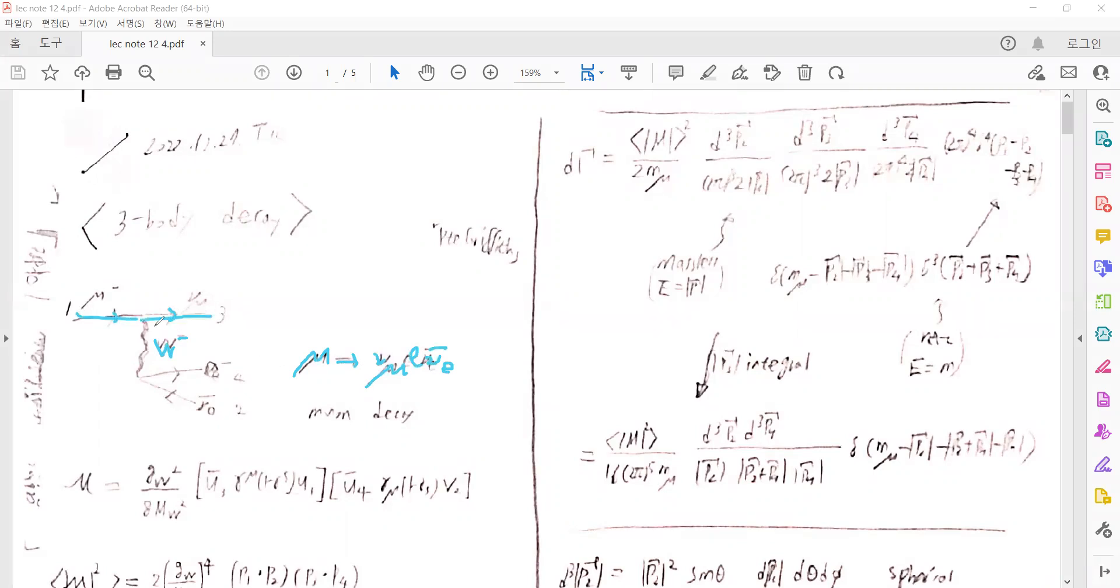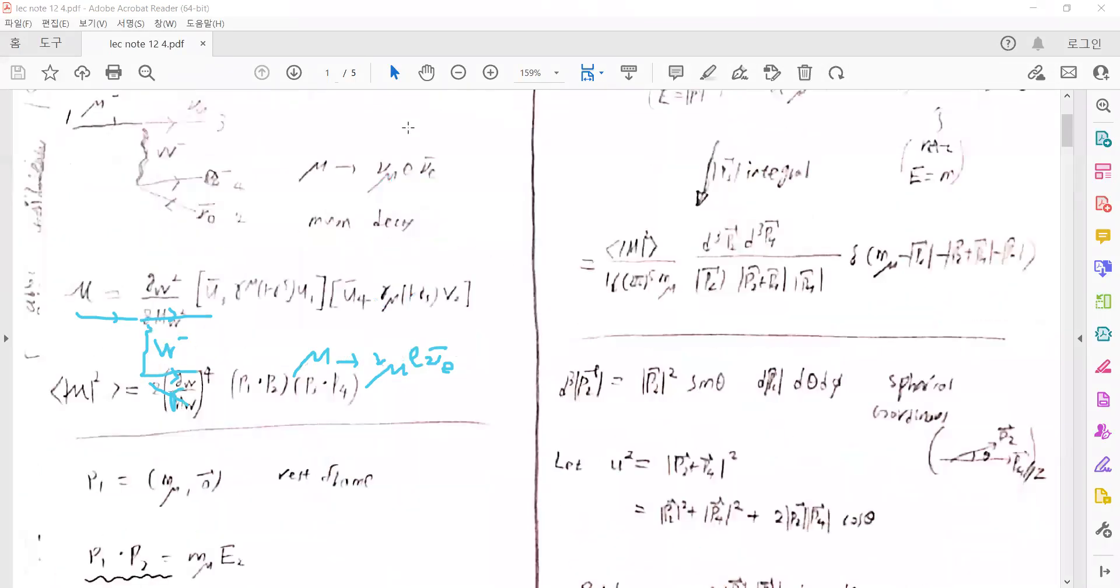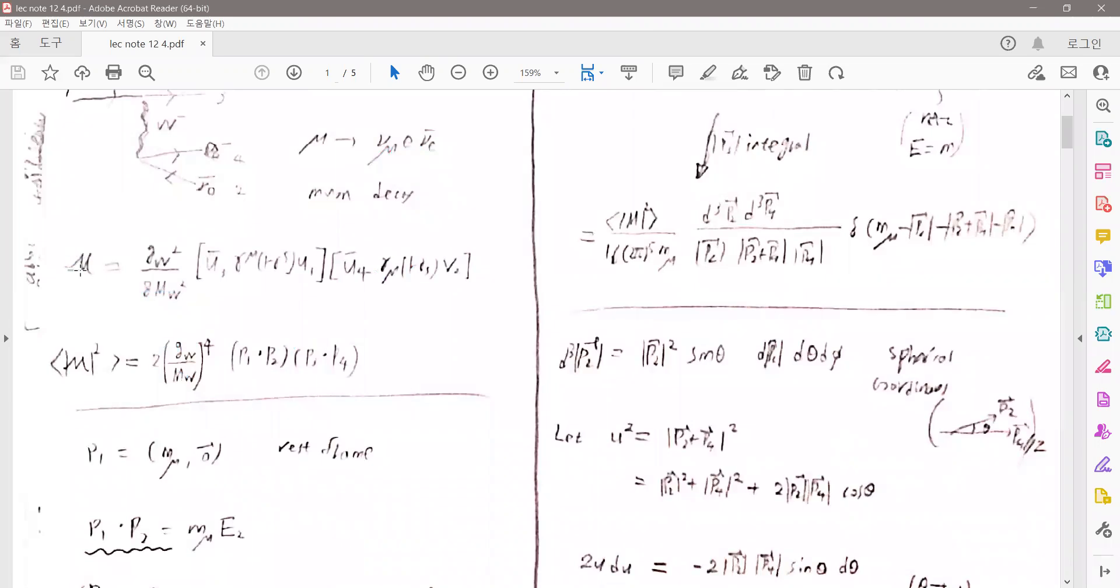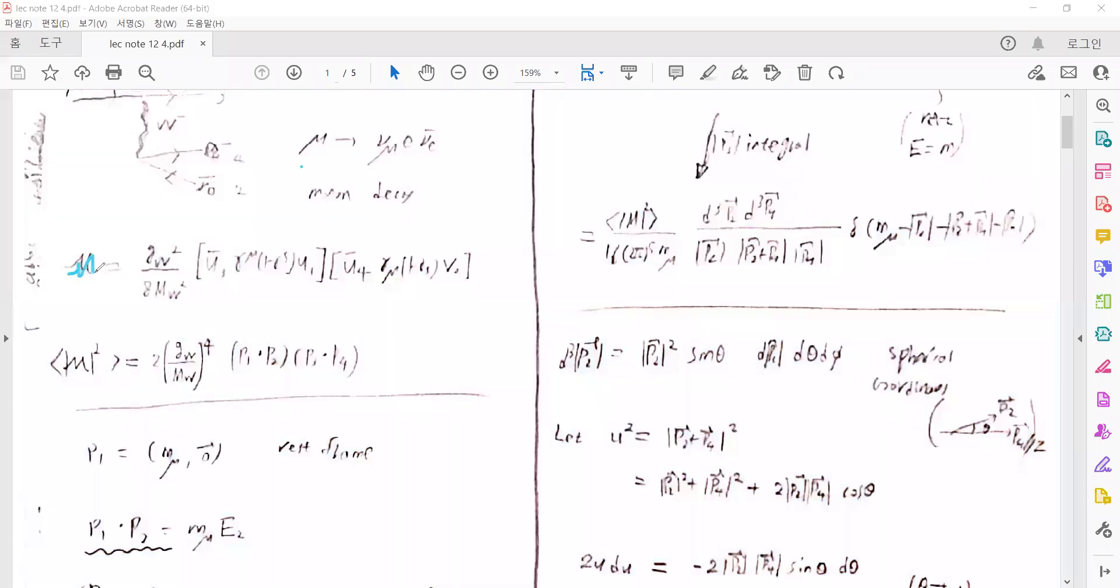The diagram of the muon decay can be drawn like that. From that, we can write down the S-matrix. We can write the propagators, the denominators that have only the W boson mass terms, and we will write down the Fermi constant, which is related to the weak interaction strength.